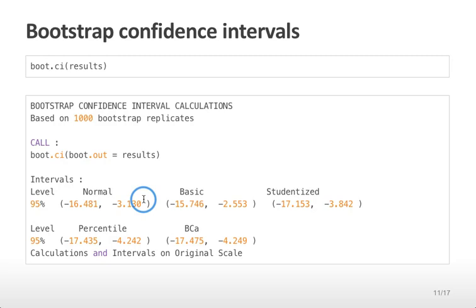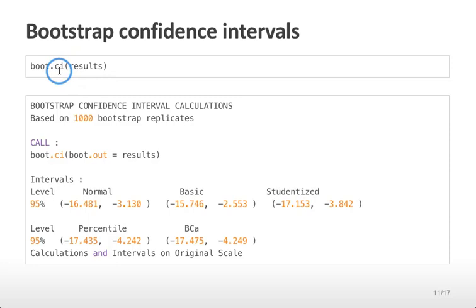These confidence intervals can come in several different forms depending on the flavor of bootstrap that you do. You can look at the boot.ci documentation to learn more about the differences between each type of confidence interval. All of these confidence intervals are less parametric than the assumptions you would make if you calculate confidence intervals from the confint function directly applied to the linear model.